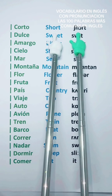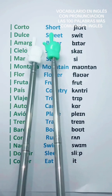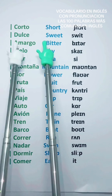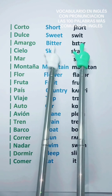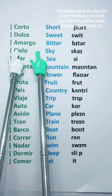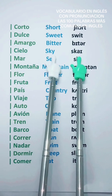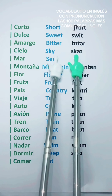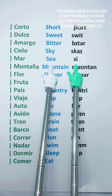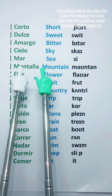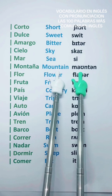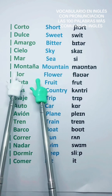Pequeño — Small. Alto — Tall. Corto — Short. Dulce — Sweet. Amargo — Bitter. Cielo — Sky. Mar — Sea.